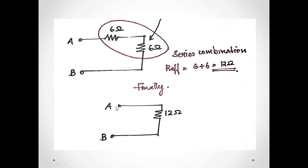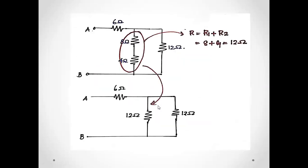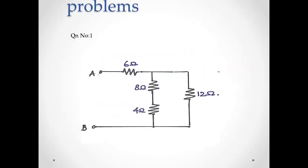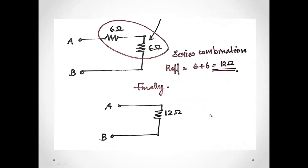Since terminal A is open, we continue reducing. With resistances 1, 2, 3, 4, we reduce step by step. I will explain more problems. If you need to practice, you can skip ahead to check the correct answer. Now I have to explain 4 problems.